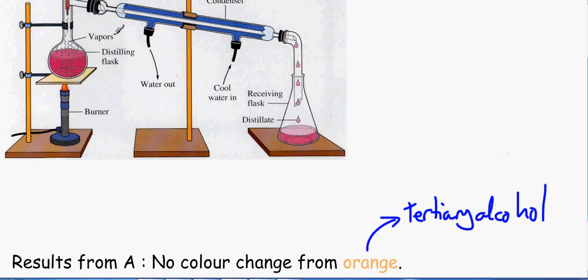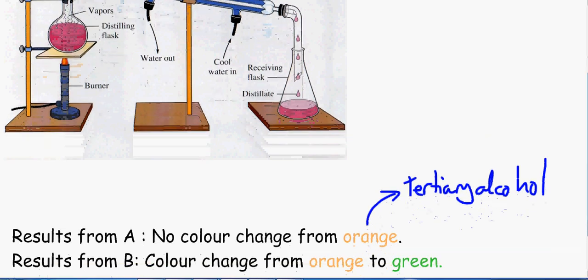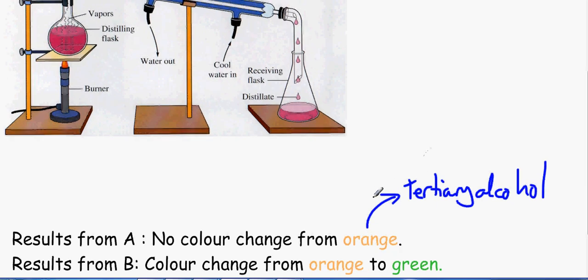So the second one we put test tube B in, obviously in the new one. And we have a colour change, fantastic, from orange to green. So we know that it's either a primary or a secondary. We don't know which one it is.